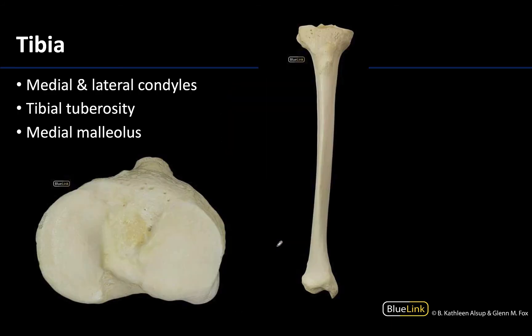Looking at the individual tibia, the proximal portion is going to be part of the articulation of the knee joint, and the distal portion will articulate with the talus and the fibula, forming the talocrural joint.